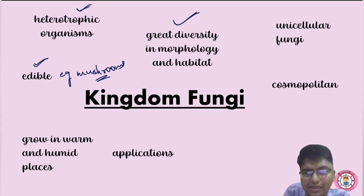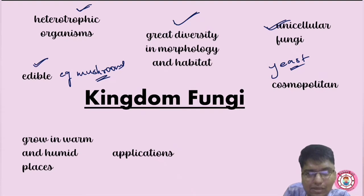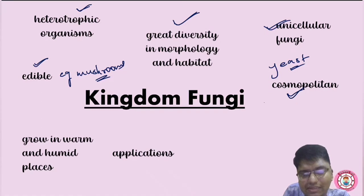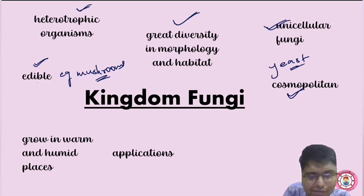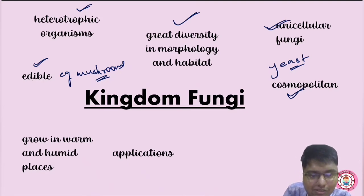Unicellular fungi are known as yeast. Fungi are cosmopolitan — found everywhere — in air, water, soil, as well as in plants and animals. They grow in warm and humid places. For example, bread or any food kept open for a long time catches a powdery growth on it — that powdery thing is nothing but fungus.